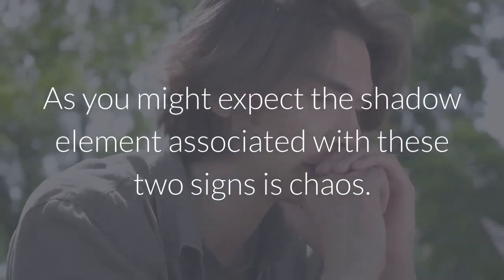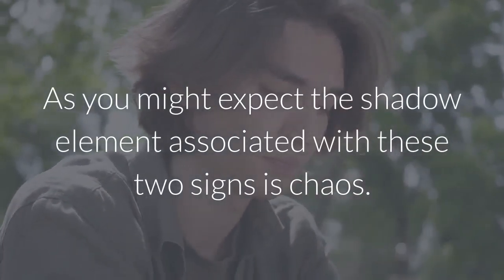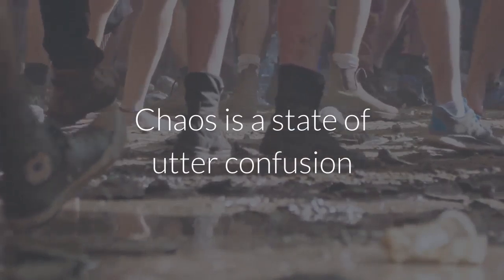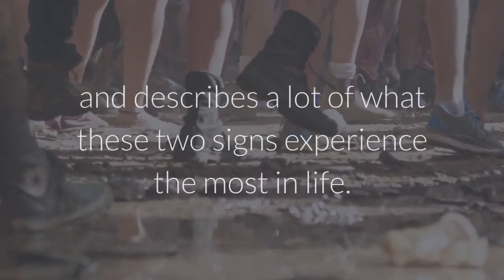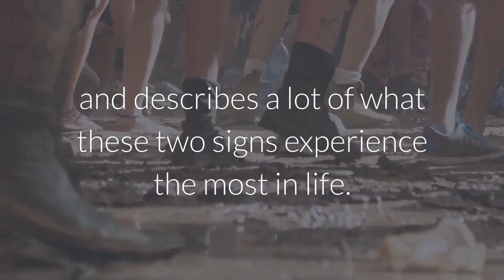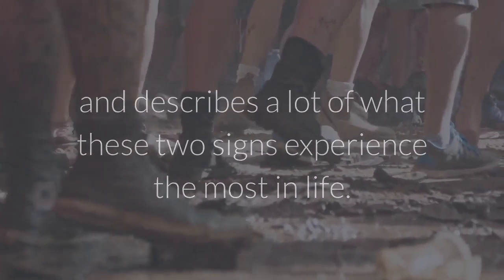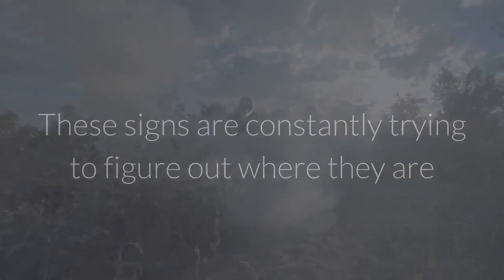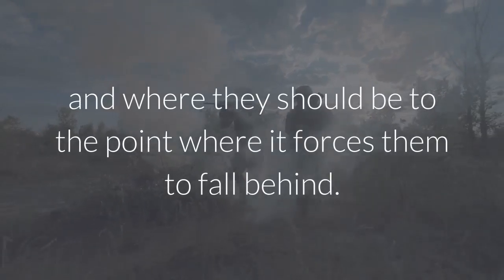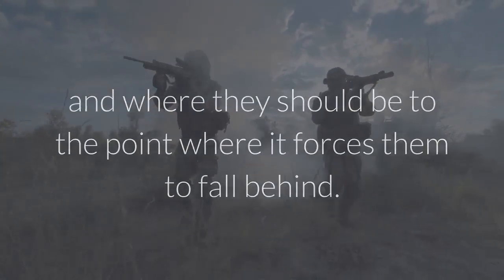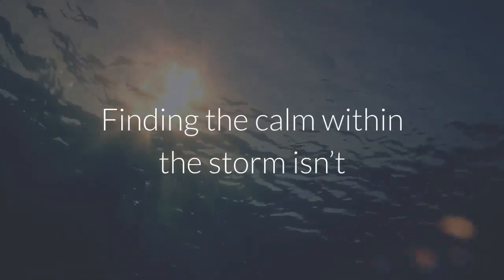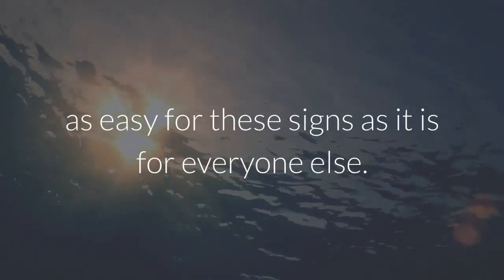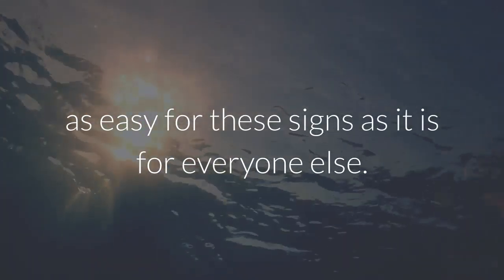The shadow element associated with these two signs is chaos. Chaos is a state of utter confusion and describes a lot of what these two signs experience most in life. These signs are constantly trying to figure out where they are and where they should be, to the point where it forces them to fall behind. Finding the calm within the storm isn't as easy for these signs as it is for everyone else.